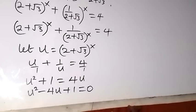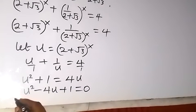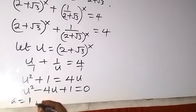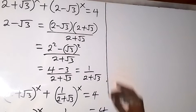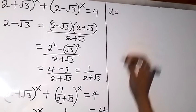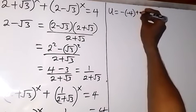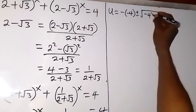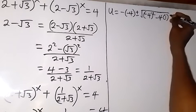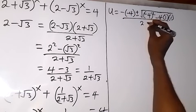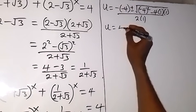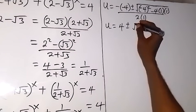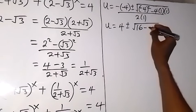Now we can solve this quadratic equation using the formula method. Here a is 1, the coefficient of u squared; b is minus 4, the coefficient of u; and c is 1. Using the quadratic formula, u equals minus b, that's minus minus 4, plus or minus square root of b squared minus 4ac, all over 2a. That gives us 4 plus or minus square root of 16 minus 4, all over 2.